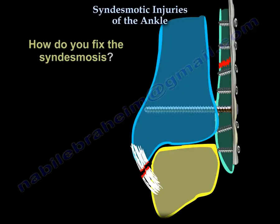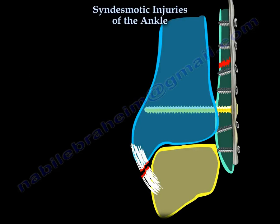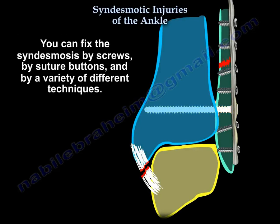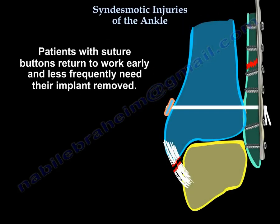How do you fix the syndesmosis? Screws are supposed to be the gold standard for fixation, but they are no longer the gold standard. You can fix the syndesmosis by screws, by suture buttons, and by a variety of different techniques. Patients with suture buttons return to work early and less frequently need the implant removed.